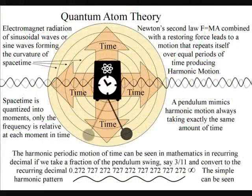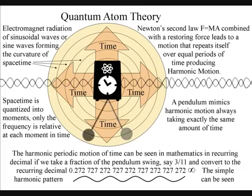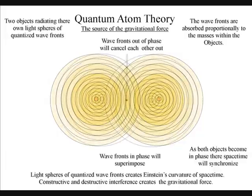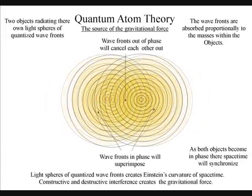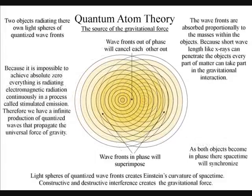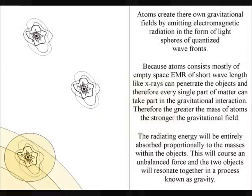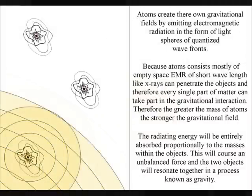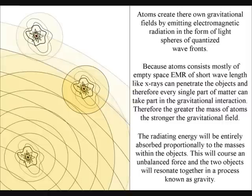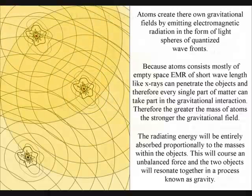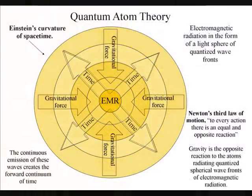When the light or electromagnetic radiation comes in contact with another object, it will be absorbed in proportion to the masses of that object. This will create an unbalanced force, and the two objects will resonate together in a process that we call gravity. Because atoms consist mostly of empty space, the electromagnetic radiation of short wavelengths, like x-rays, can penetrate the objects, therefore every single part of matter can take part in the gravitational interaction. The gravitational field will propagate at the same speed that the electromagnetic radiation moves, the speed of light, therefore there is no instantaneous action at a distance.